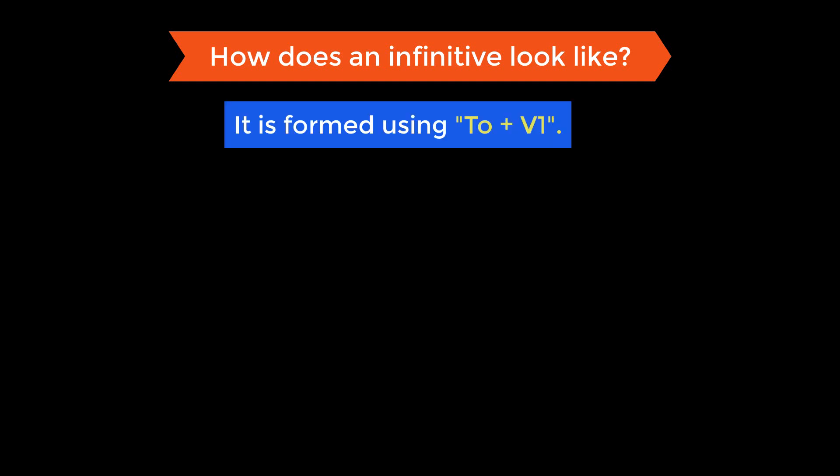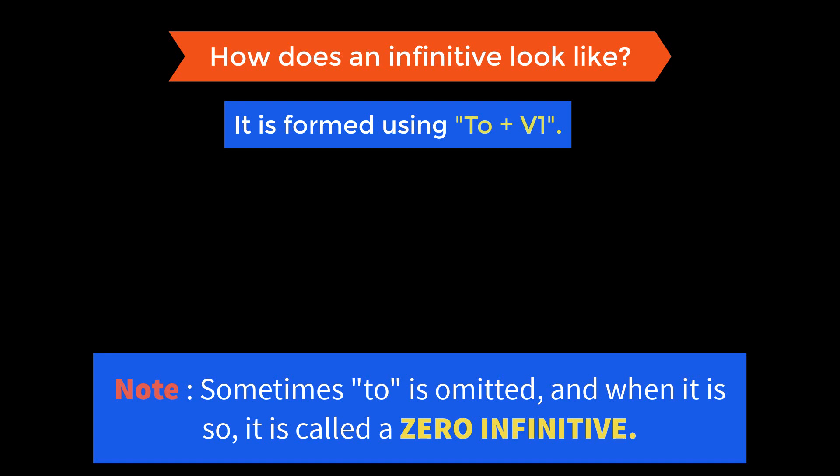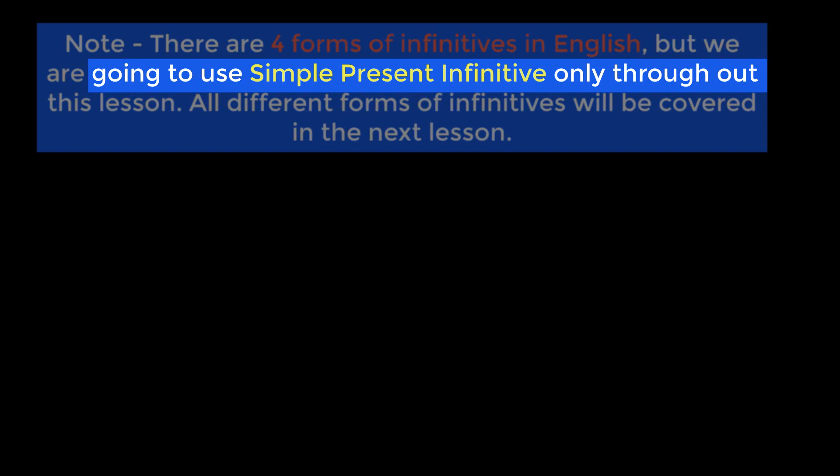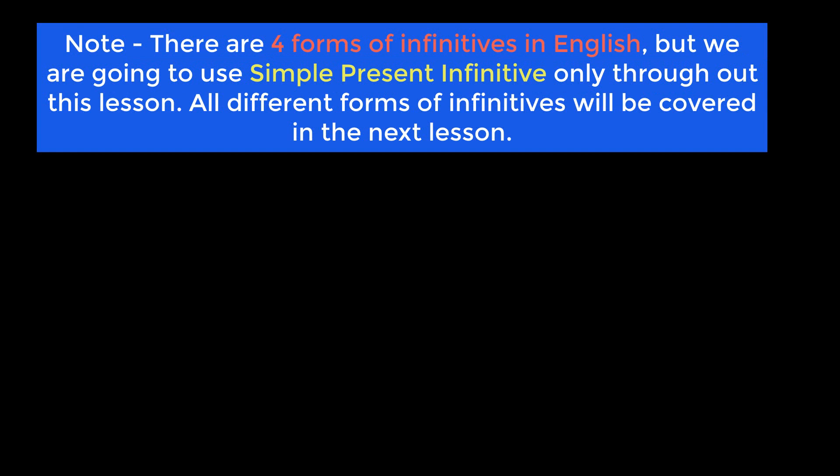An infinitive looks like 'to + first form of the verb.' Sometimes, rarely, the 'to' is not there in the infinitive — when that happens it is called a zero infinitive, and we'll talk about that in a separate lesson. There are also four different forms of infinitives in English, but in this lesson we are only going to use simple present infinitives.